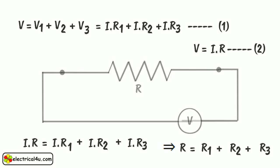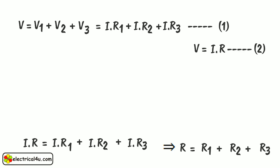Instead of 3, if we connect any number of resistors in series, we can write this equation as R equals R1 plus R2 plus R3 plus dot dot dot plus Rn, where n is the total number of resistors connected in series.